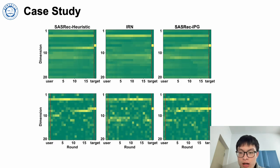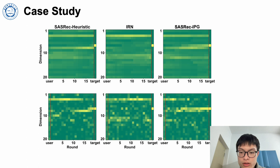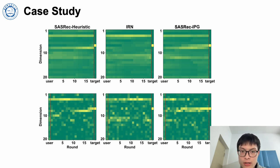We also conduct a case study to show how user interests change. The first row shows the embedding evolution of a user with a target item, and the second row shows the embedding of the recommended items under three methods. The first column of each subfigure is the user's initial embedding, and the last column shows the target item's embedding, which reflects that our proposed IPG is really effective in guiding.